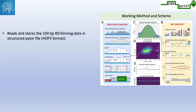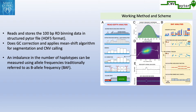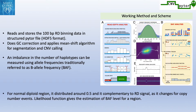It reads and stores 100 base pair read-depth signal in structured Pytor files. GC correction applies a mean-shift algorithm for segmentation and CNV-calling. An imbalance in the number of haplotypes can be measured using allele frequency, traditionally referred to as B-allele frequency. For a normal diploid region, it is distributed around 0.5 and is complementary to the RD signal. A change in this signal can indicate variation in copy number, and a likelihood function gives the estimation of the BAF level for a region.